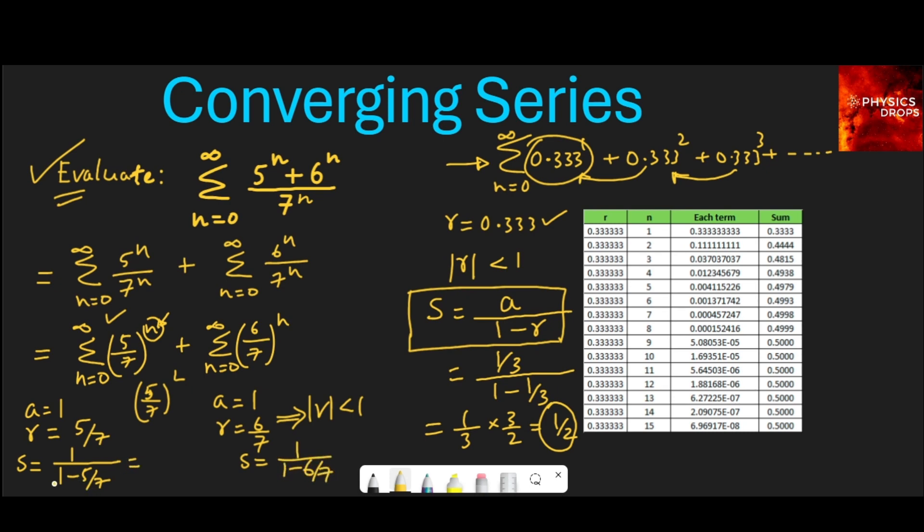When we evaluate this we will get 1 upon 1/7. So let me write this here. This would become 7 upon 2 and this term would become 7.